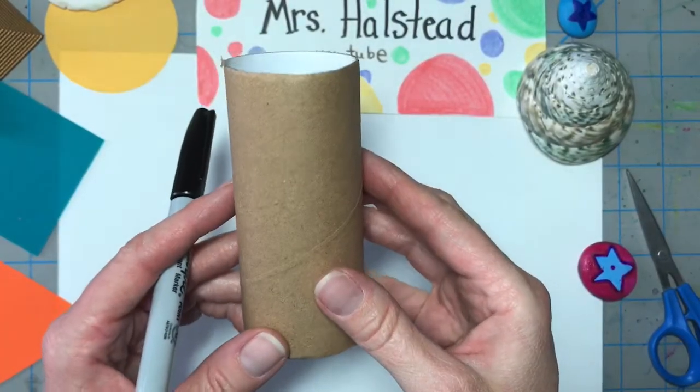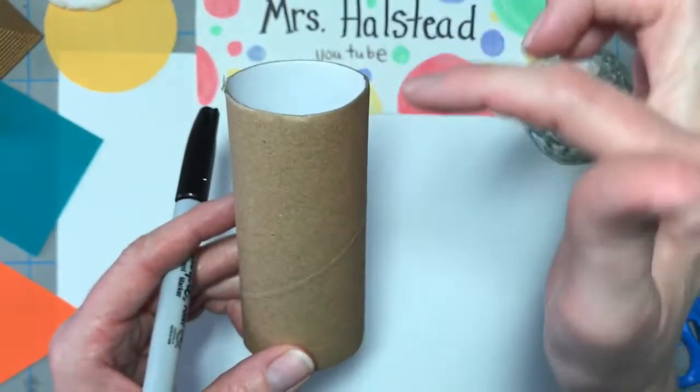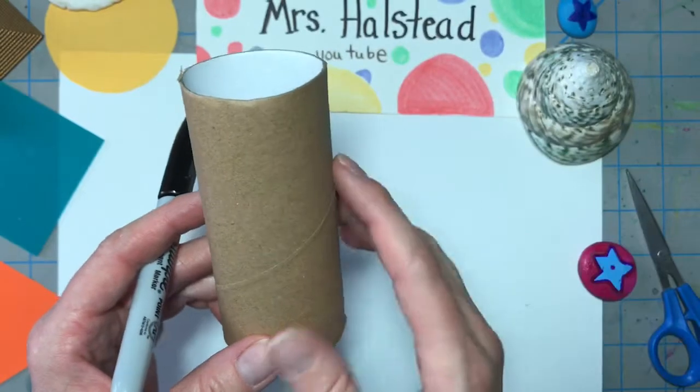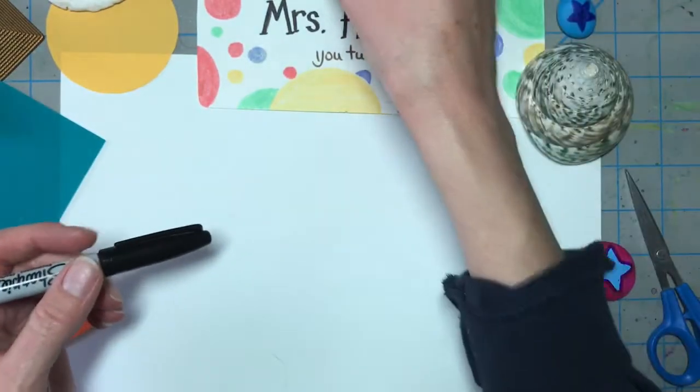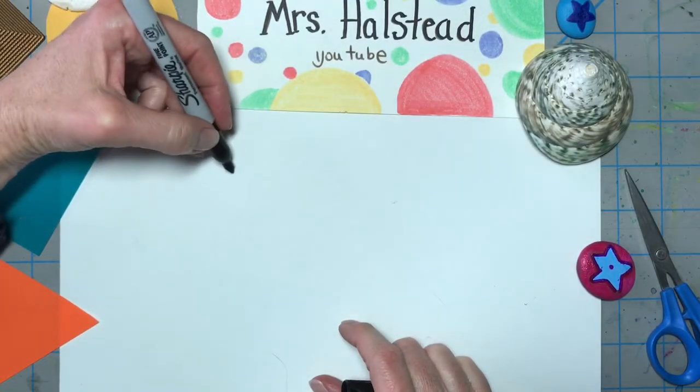Now we're going to try drawing some 3D shapes. When you look at a cylinder, there's an oval at the top, so the first thing we're going to draw is an oval.